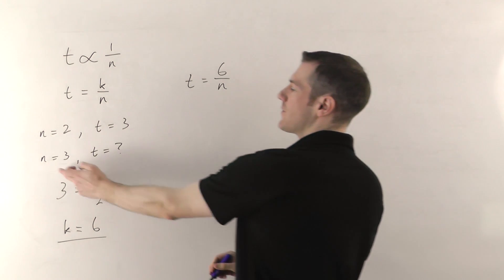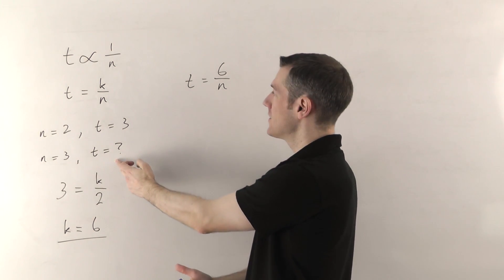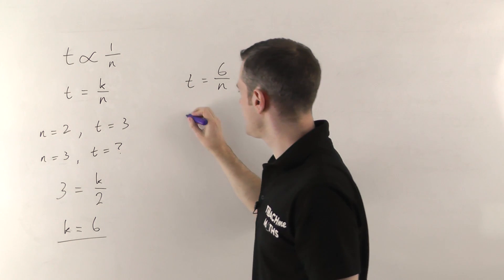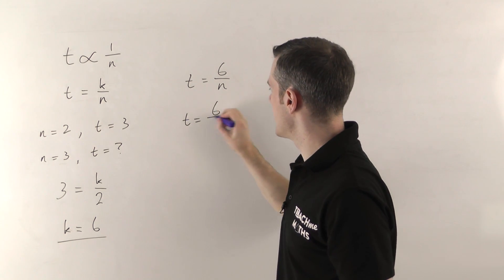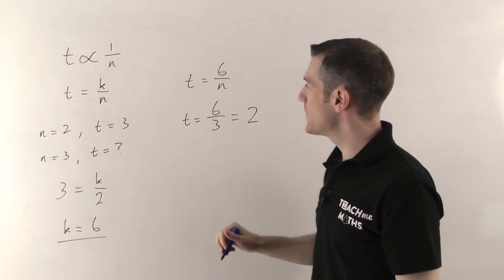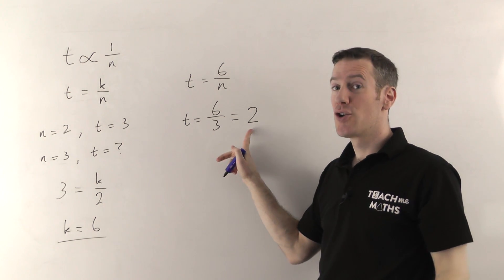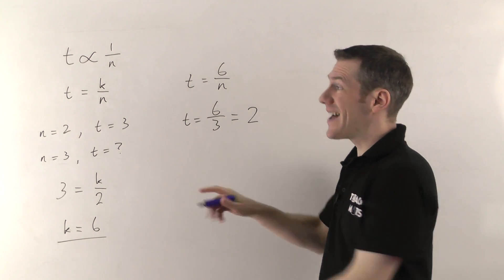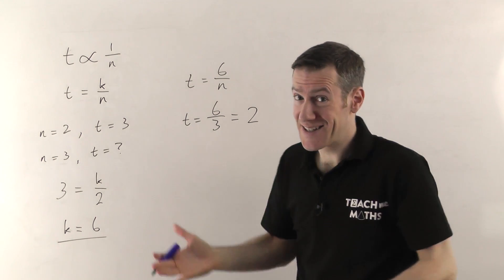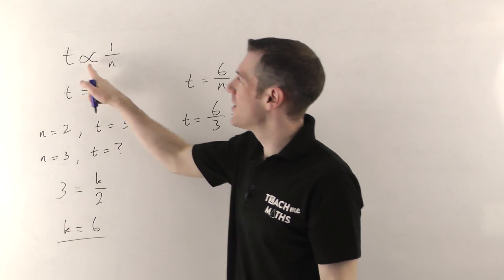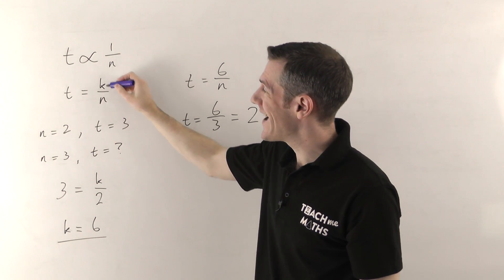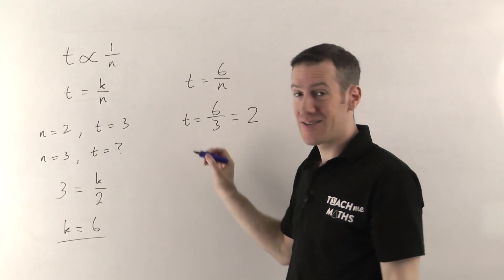Now use the equation to answer the question. They're saying: if three people mow the lawn, n is 3. So t equals 6 divided by 3, which is 2. When three people are mowing the lawn, it will take two hours. That's how you do an inversely proportional question — it's exactly the same method as the proportional one, except you'll have K over the variable instead of K times the variable.